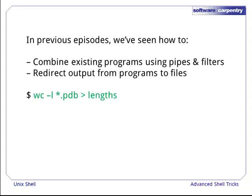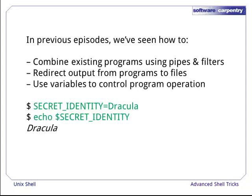Redirect output from programs to files. For example, counting the number of lines in all PDB files and storing the results in a file. Use variables to control program operation. For example, creating a new variable called secret_identity and assigning the value Dracula to it.